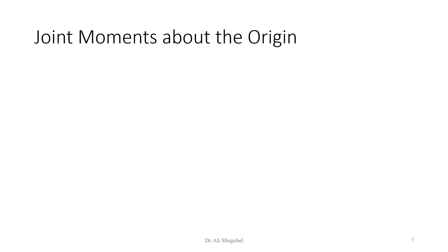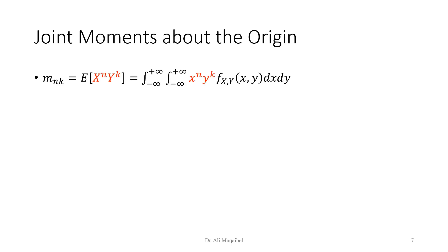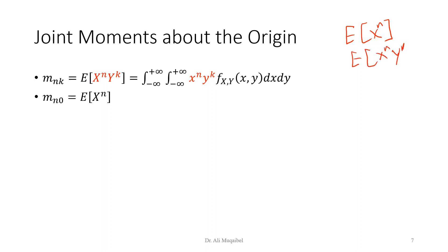Joint moments about the origin: we define the joint moments about the origin as the expected value of x raised to power n times y raised to power k. With one variable it was just the expected value of x^n; now with two variables it is the expected value of x^n * y^k, where n and k can differ because we can have different orders or different powers for the different variables. The formula is very much the same.